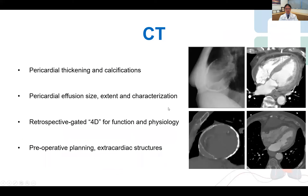Moving on to CT, which has some roles in pericardial assessment — most obvious being assessment of pericardial calcifications, both the distribution and the extent. CT is also able to assess for pericardial thickening as well as effusions. CT also has a special sequence — the retrospective gated 4D sequence — to assess for cardiac function as well as constrictive physiology. And CT is also valuable for preoperative planning for cardiac surgery.